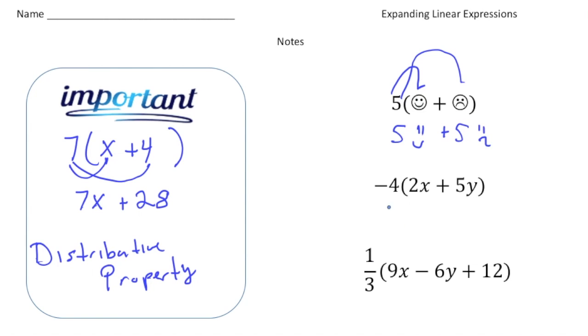Now this time we have a negative 4. So remember our rule about multiplying positives and negatives. So negative 4 times 2x is negative 8x, and then negative 4 times 5y is negative 20y. And there it is.